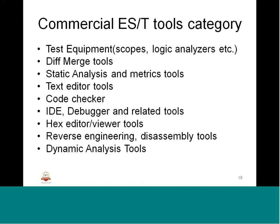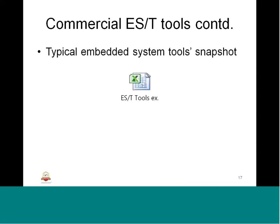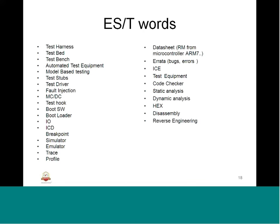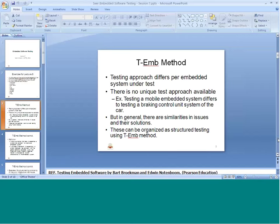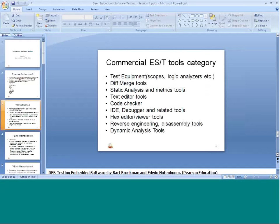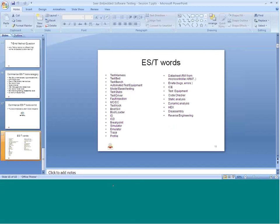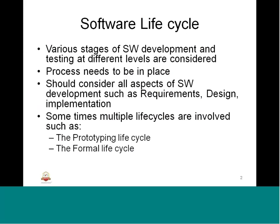Then we had controls of commercial tools — what are those categorized in terms of measurement, editing, or debugging. So all these are categorized as basic categories of commercial tools. We had an example snapshot of typical embedded system tools and we also studied about different words. So, what is a software life cycle? We know the various stages of software development and testing that different levels are used, and those need to be considered for implementing an embedded software system.